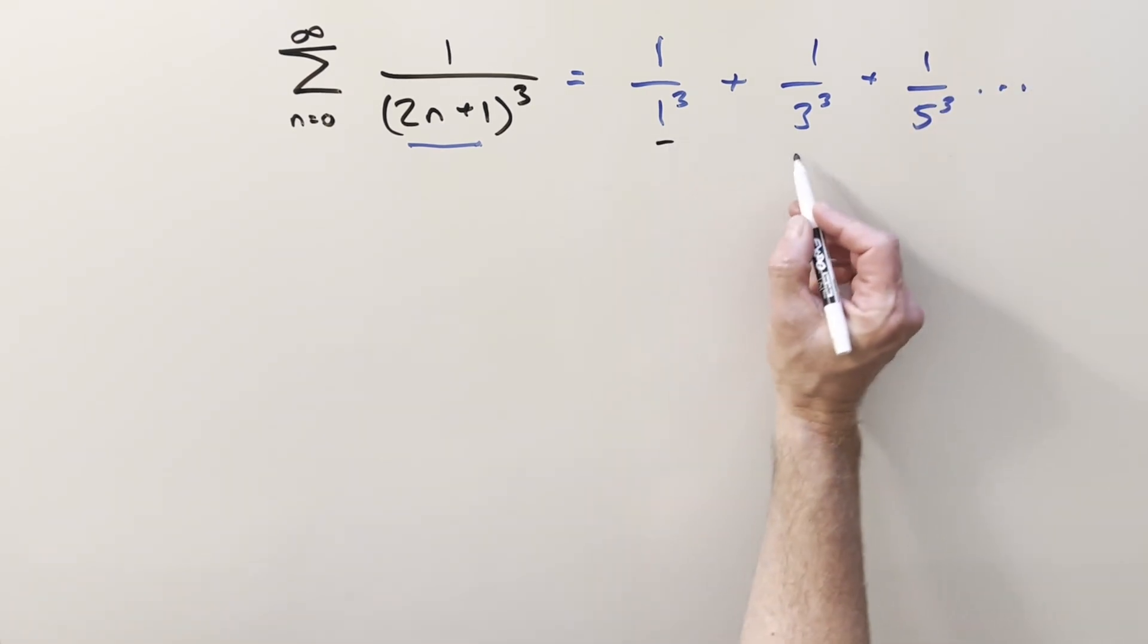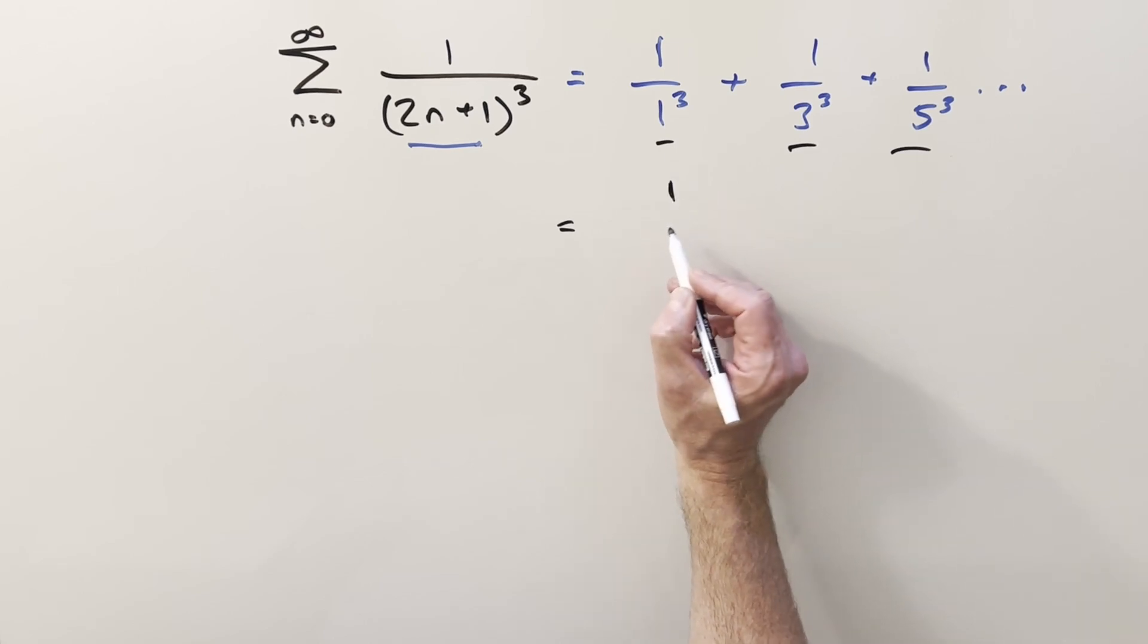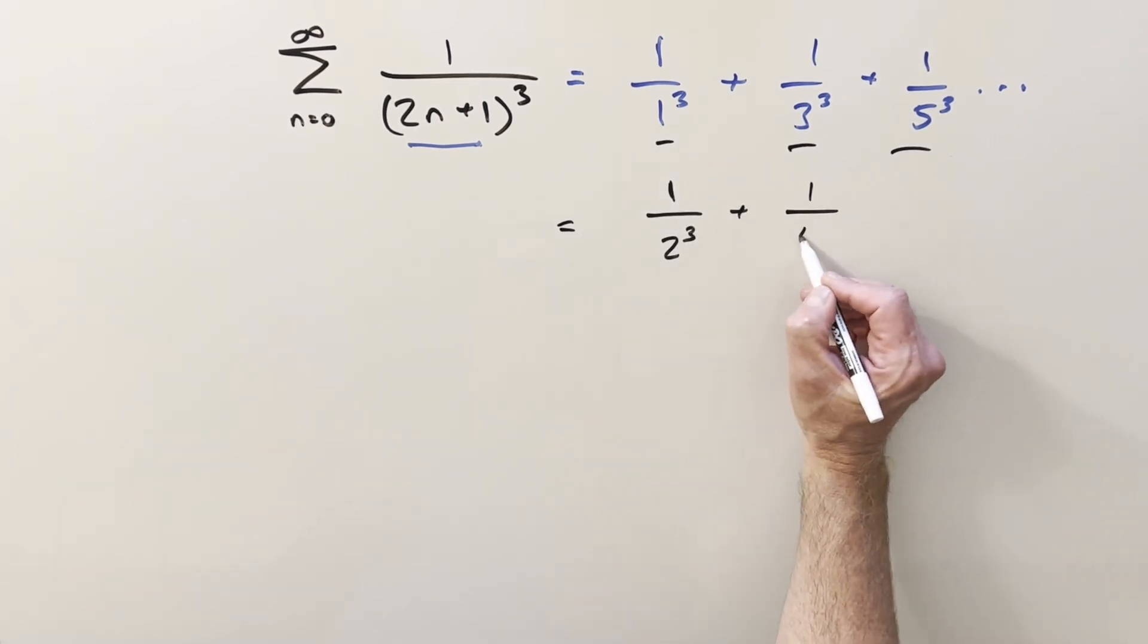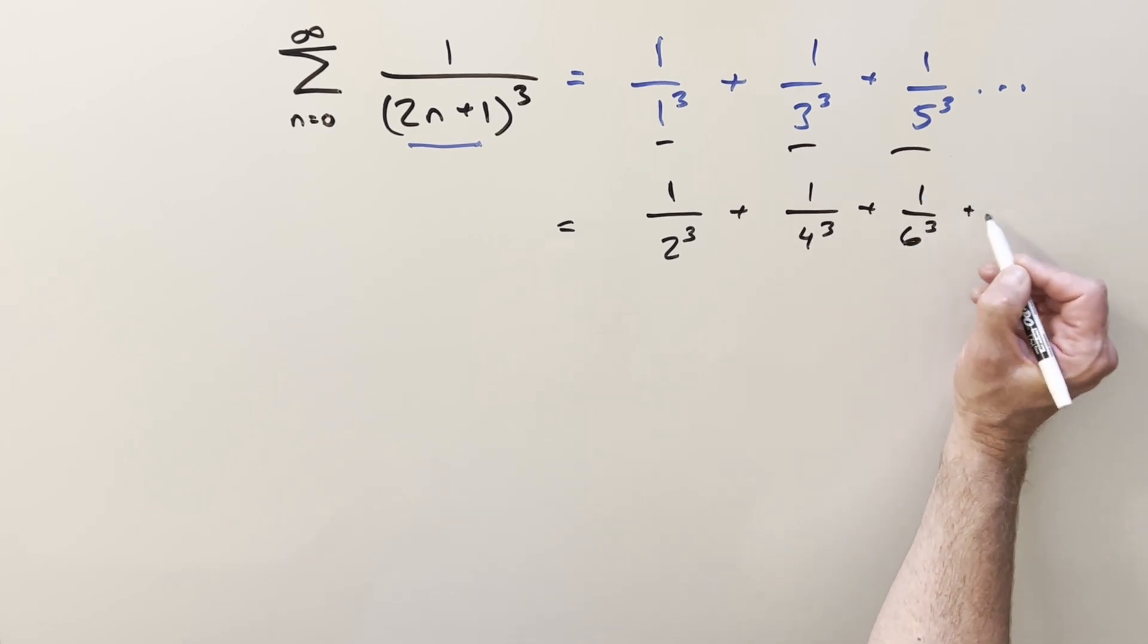So we have all odd terms. But what if we look at all the even terms? If we add 1/2³ + 1/4³ + 1/6³ on to infinity.